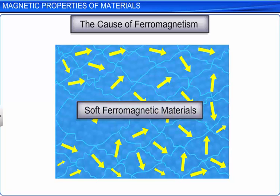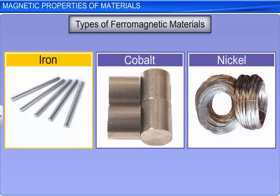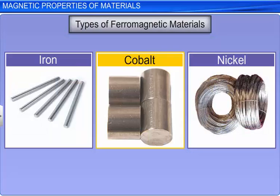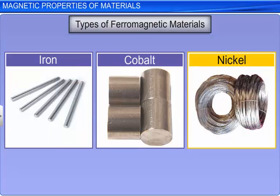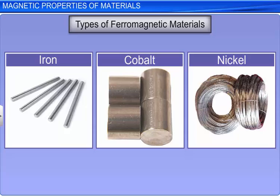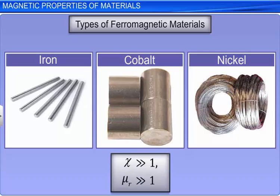Iron, cobalt, nickel, etc. are examples of soft ferromagnetic materials. The magnetic susceptibility of ferromagnetic materials is positive and very much greater than 1. The relative magnetic permeability of these materials is also positive and very much greater than 1.